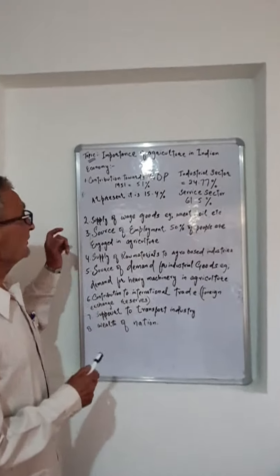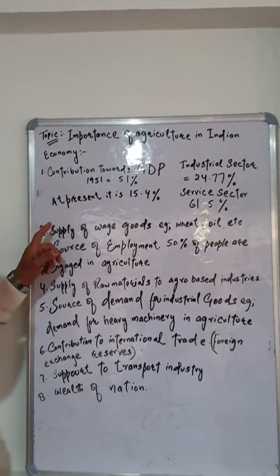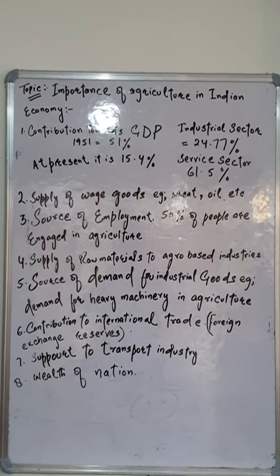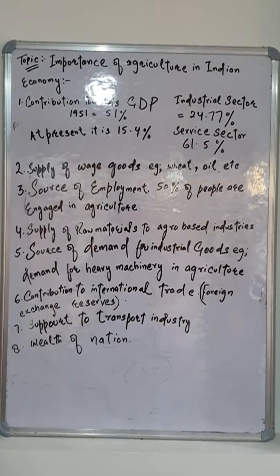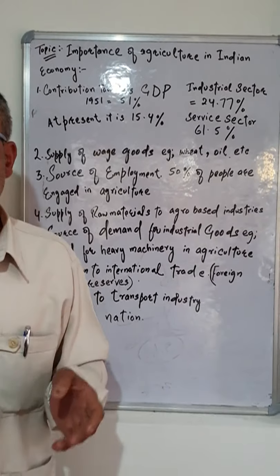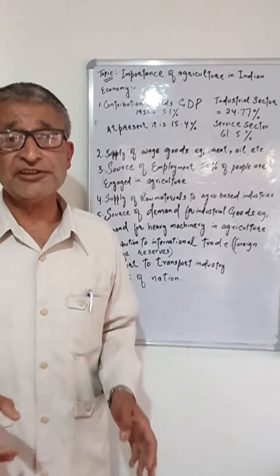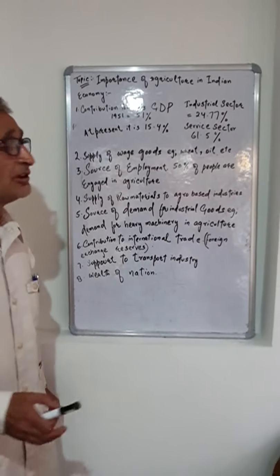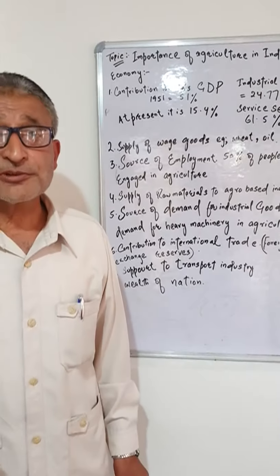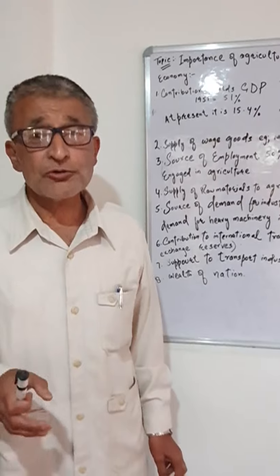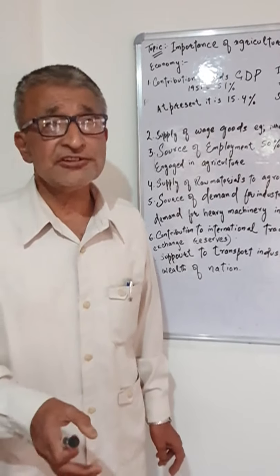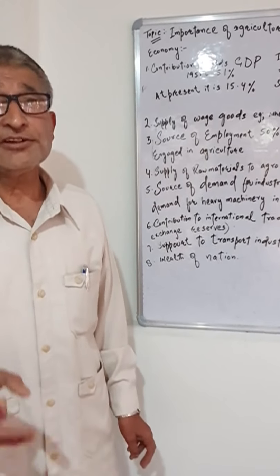The first point is that agriculture contributes towards GDP — Gross Domestic Product. In 1951, agriculture's share in GDP was 51%, but it is declining. Today it is only 15.4%. It is declining because people are moving towards the service sector and the tertiary sector.